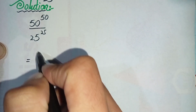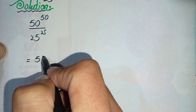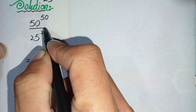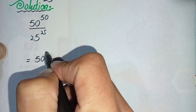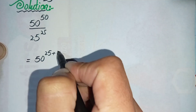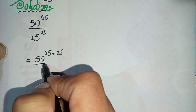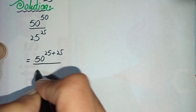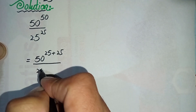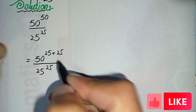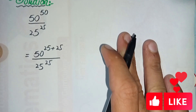So it will become equal to: we can write the numerator as 50 raised to power (25 plus 25), divided by the denominator 25 raised to power 25.